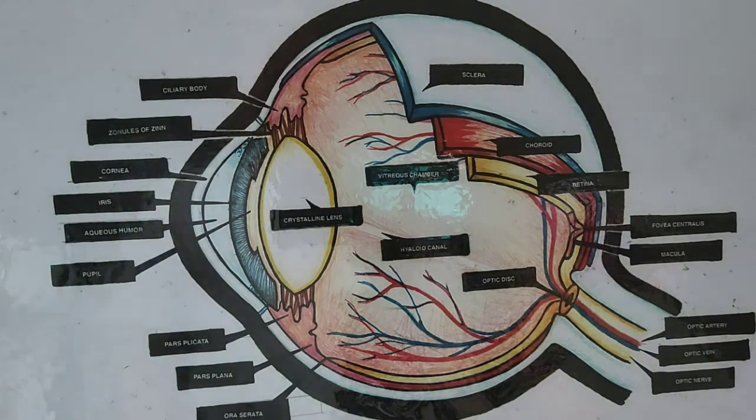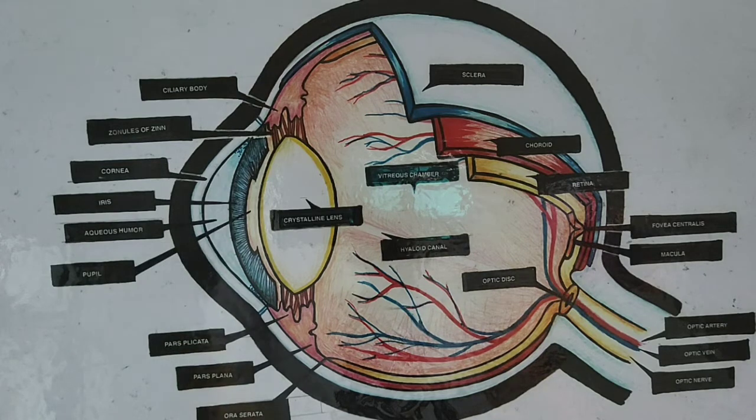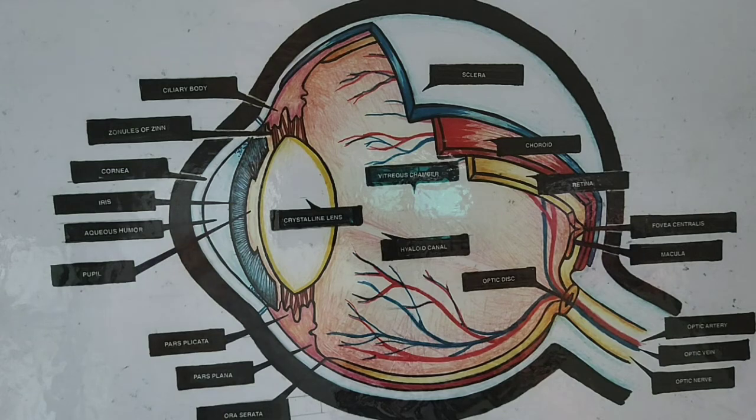We call this the sclera. You can see it externally as the white part of our eye. Now the sclera is a fibrous coating, which means it's very strong and very tough. It protects the eye from foreign bodies or any trauma or anything that might hurt the eye. It's a protective coating.